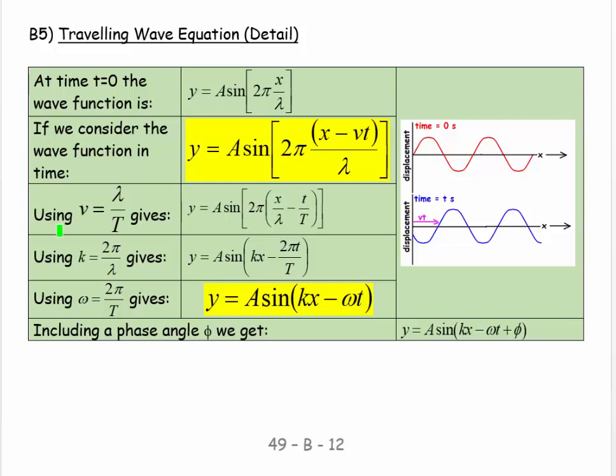And so then we say, well, if we use v equals λ over T, we get y equals A sine 2π times x over λ minus the time over the period.